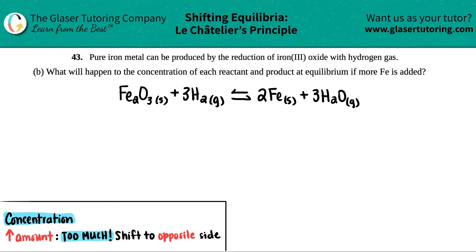Number 43: Pure iron metal can be produced by the reduction of iron(III) oxide with hydrogen gas. Part B asks what will happen to the concentration of each reactant and product at equilibrium if more Fe is added.